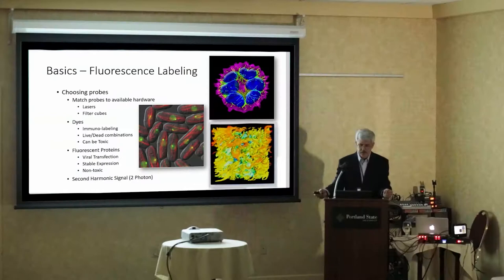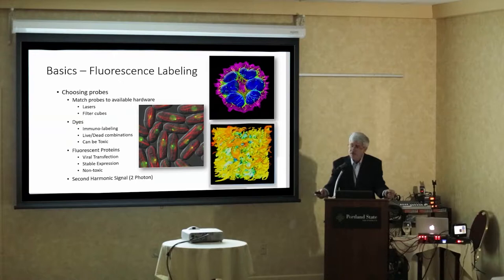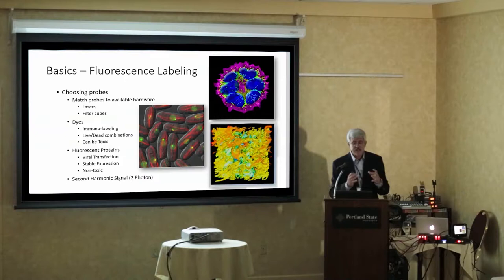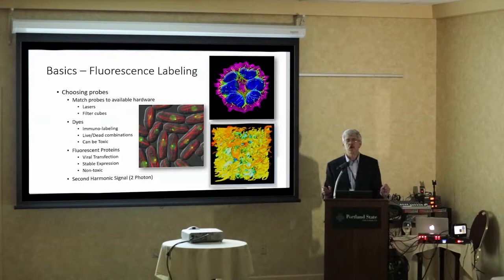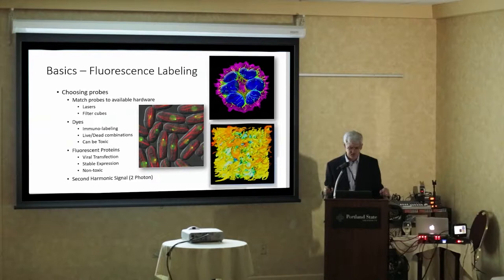Let's take a longer look at fluorescence labeling. There are issues with fluorescent labeling — you want to match your probes to the hardware you've got. Somebody comes in and says they've got cells labeled with CFP and YFP, let's use the SP8. Guess what — I can't, because I don't have a laser that will excite CFP on that particular one. I've got to use the other scope, which means another kind of dish, and another type of environmental control. It all ties together.